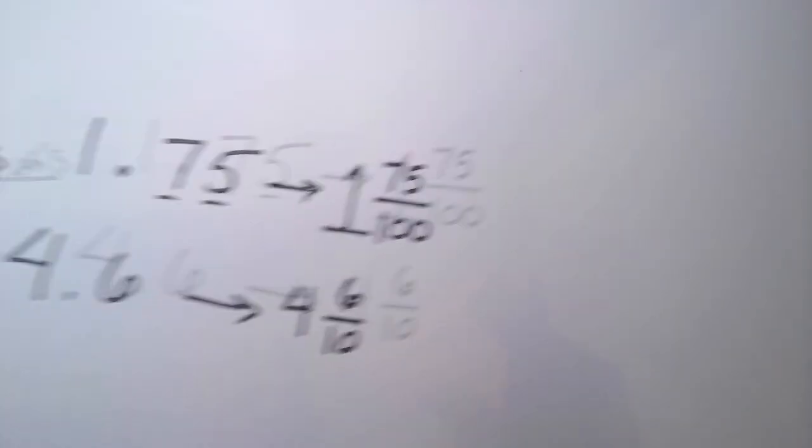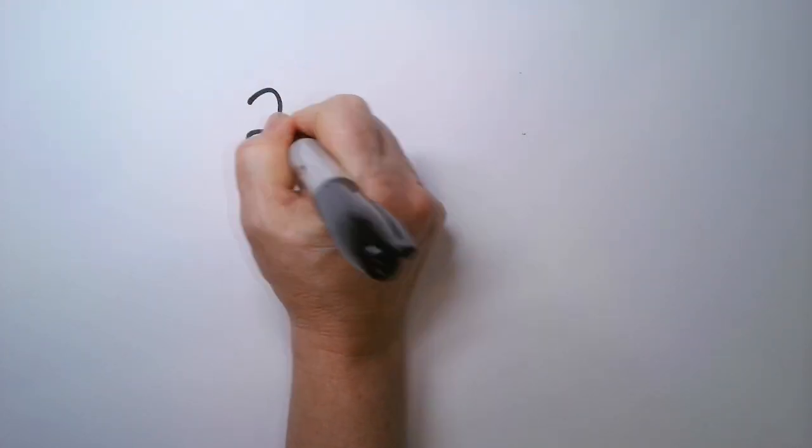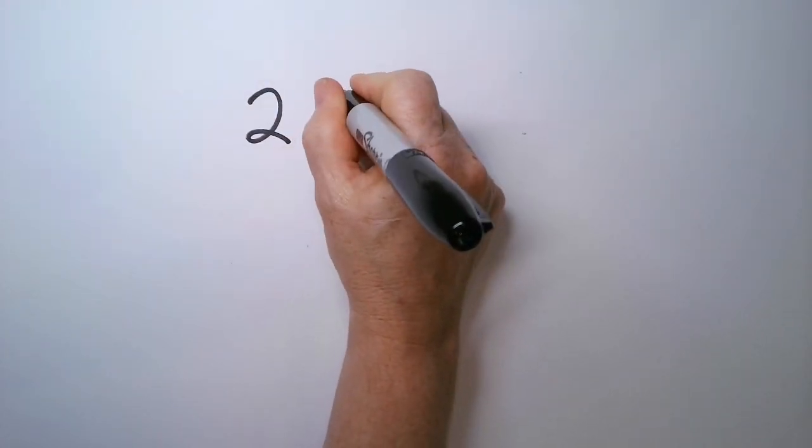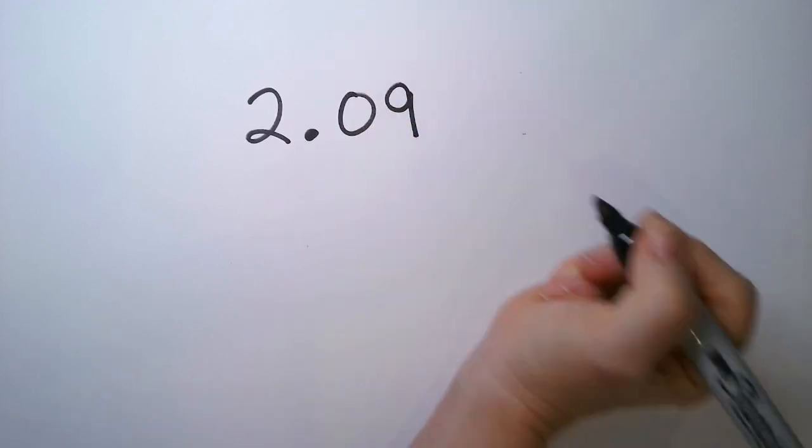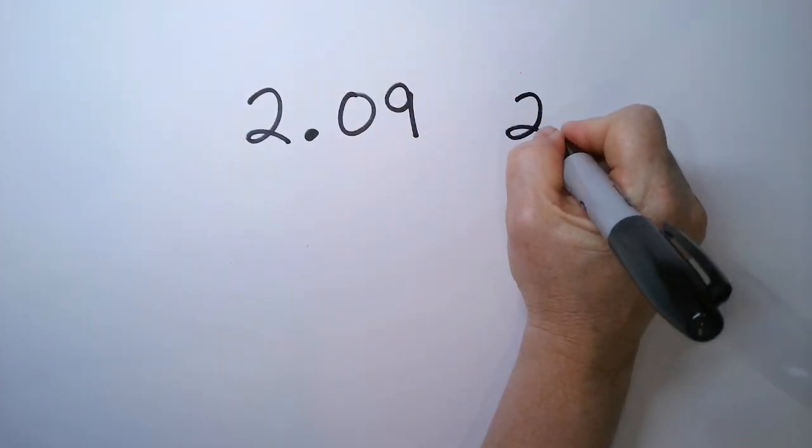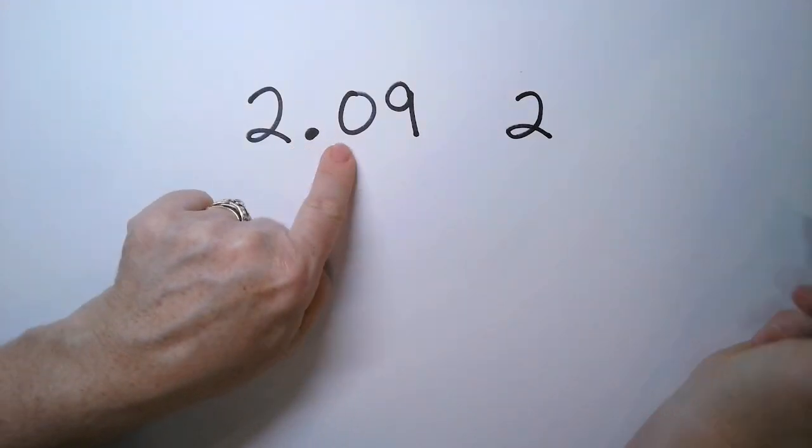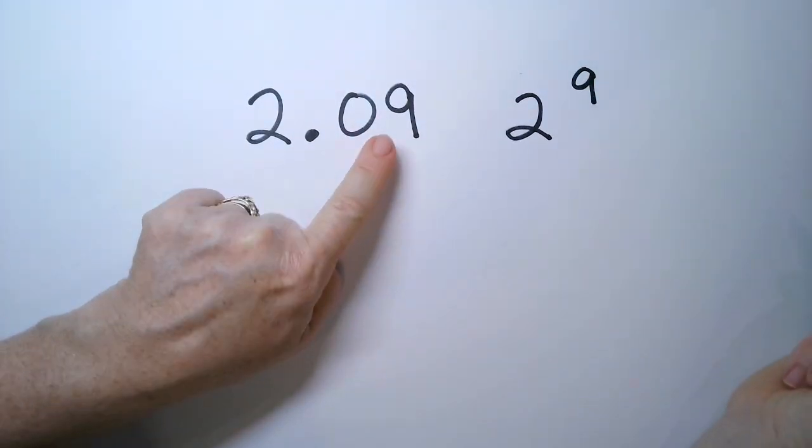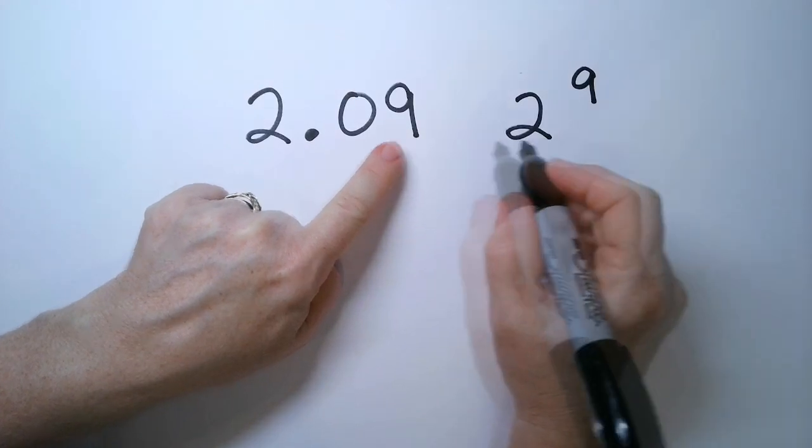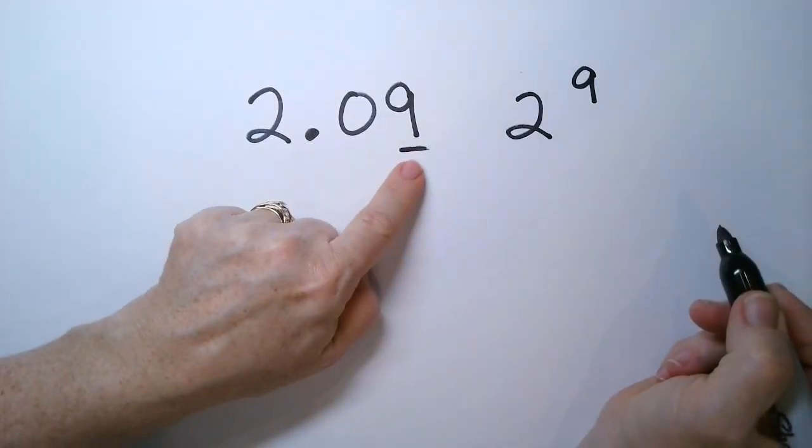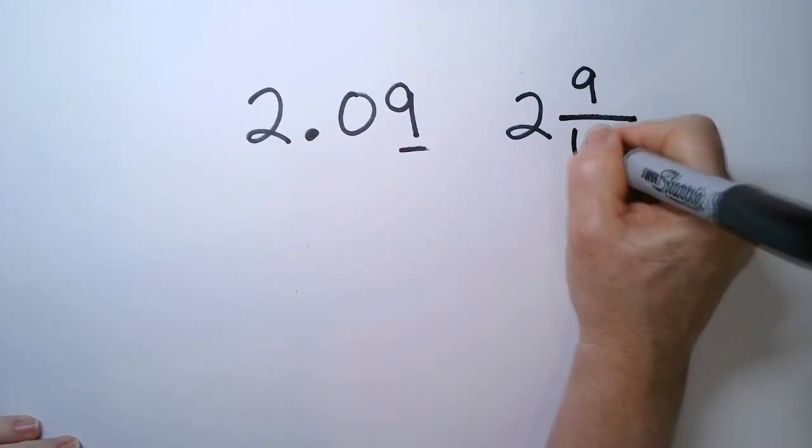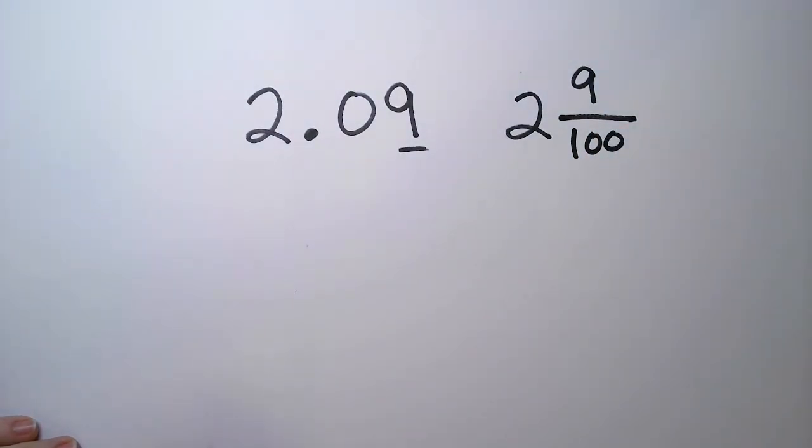So let's try a couple of examples and you do it. So this one is 2.09. So this 9 is actually in the hundredths spot. So it's 2 and 9 over 100.